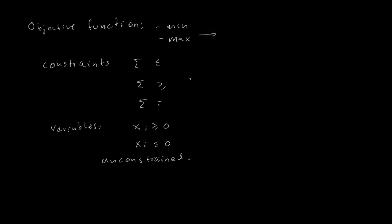There is a way in which we can transform each one of the problems into a different version. We already talked about how to transform minimization into maximization, and vice versa, by multiplying the objective function by minus one. We already talked about how to transform greater-than-or-equal-to constraints into less-than-or-equal-to constraints, or equal constraints into both of them. And also we can transform unconstrained versions.